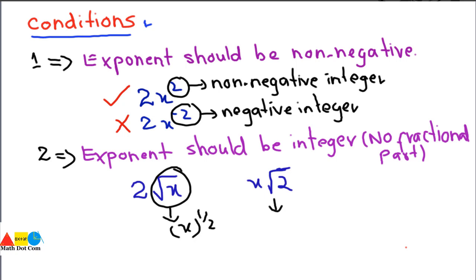While in the case of x√2, this is a polynomial because √2 is the coefficient and the power of x is 1. So here the exponent is 1 and there the exponent is 1/2. This expression satisfies the condition, while the other does not, and is therefore not a polynomial.